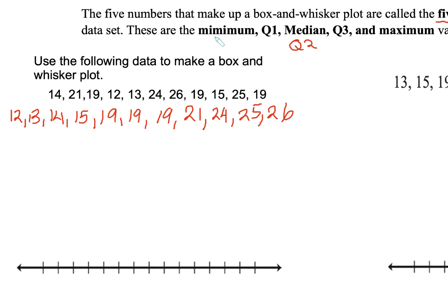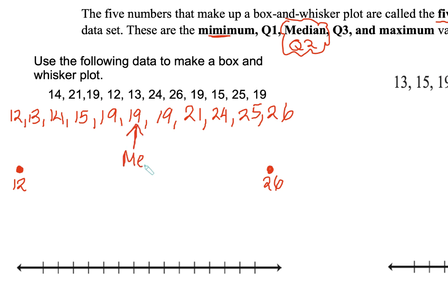Our first step is to find our minimum value. So 12 is our minimum value, and our maximum value is going to be 26. Next, we're going to find our median, because the median is what cuts your data in half. I have an odd data set with 11 points, which means my sixth value would be my median value. That 19 is my median, which would be my Q2.